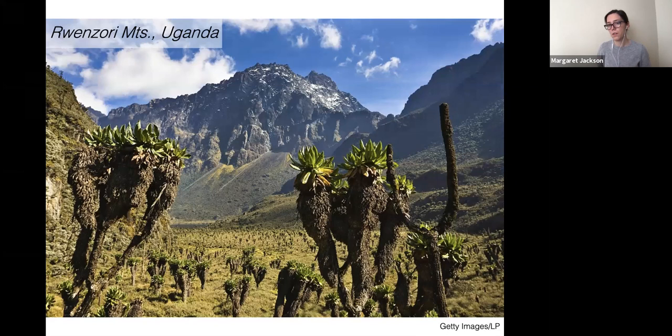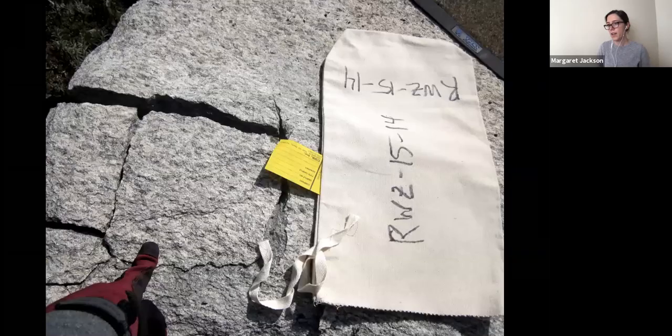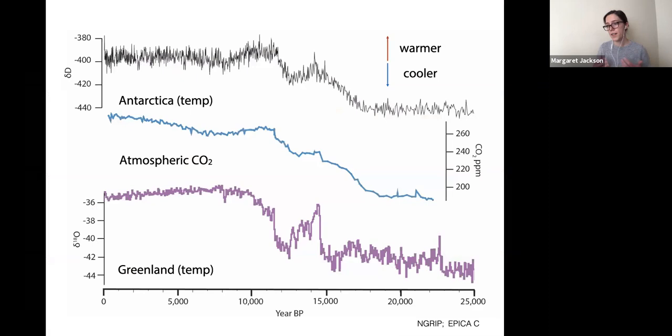We chose the Ruwenzori for two primary reasons. First, the mountains contain a huge array of very well-preserved glacial deposits. But the second consideration is that unlike Kilimanjaro and Mount Kenya, which are both volcanic edifices, the Ruwenzori Mountains are composed primarily of very quartz-rich bedrock. It's this quartz-bearing rock that allows us to use the beryllium-10 technique at this site.